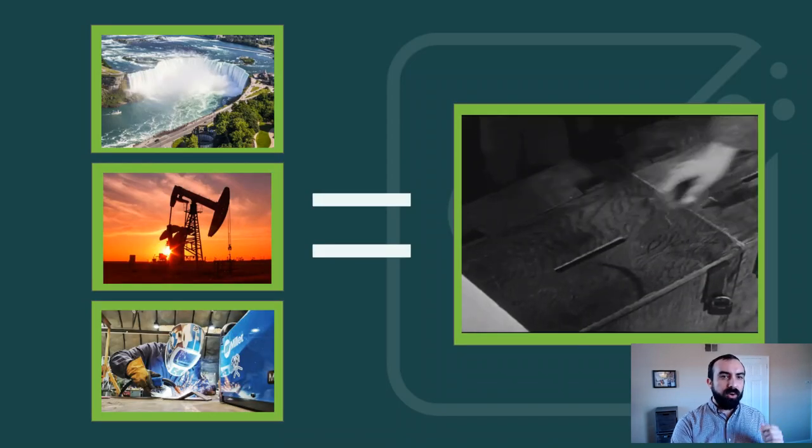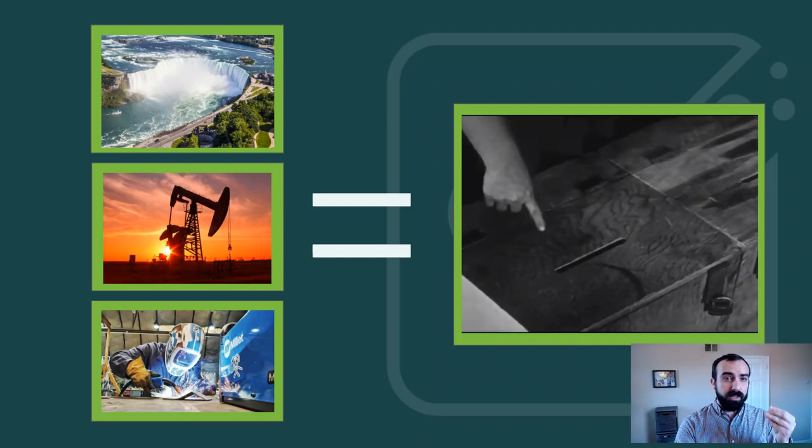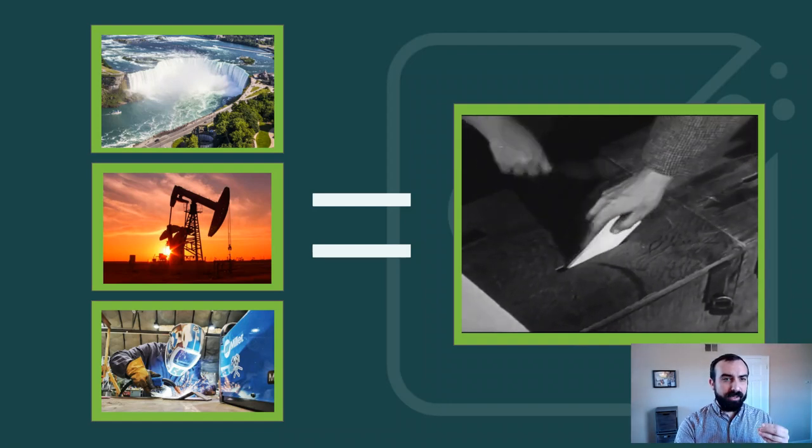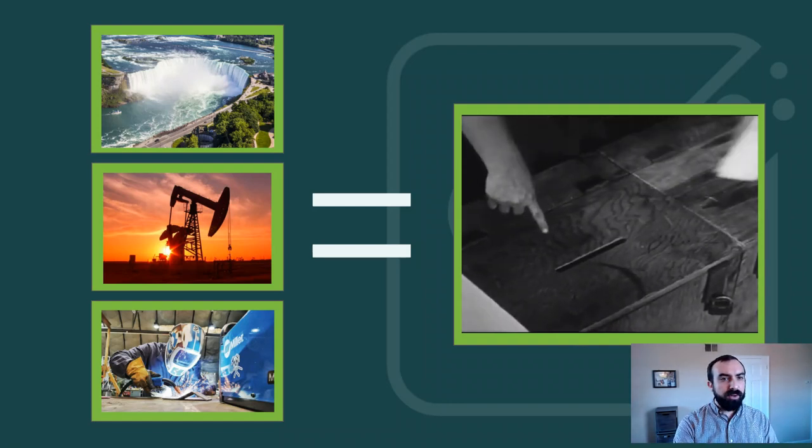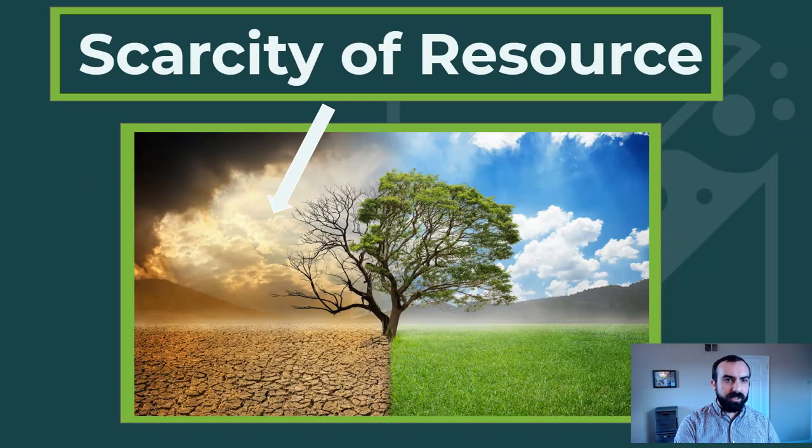Like water, oil, or human labor, a vote is a resource. Votes in an election are finite. There are only so many voters, and they can only vote for one candidate. This creates scarcity. Even if voters like multiple candidates, they don't have enough resources to vote to say that.